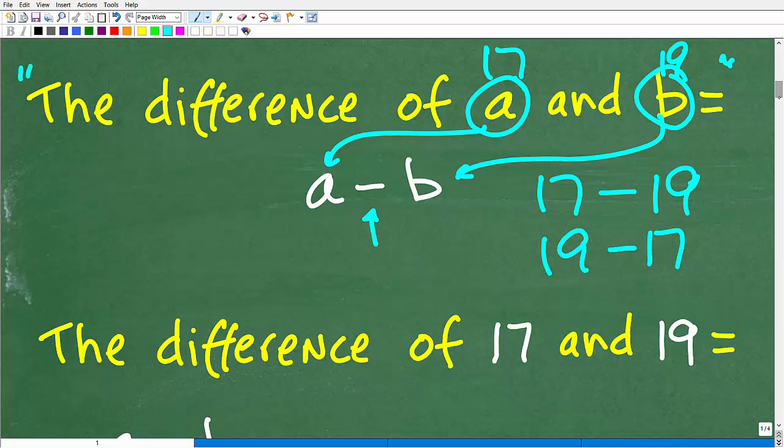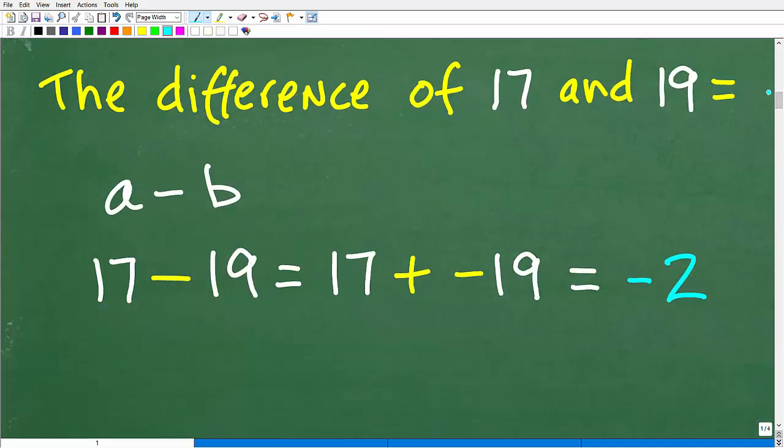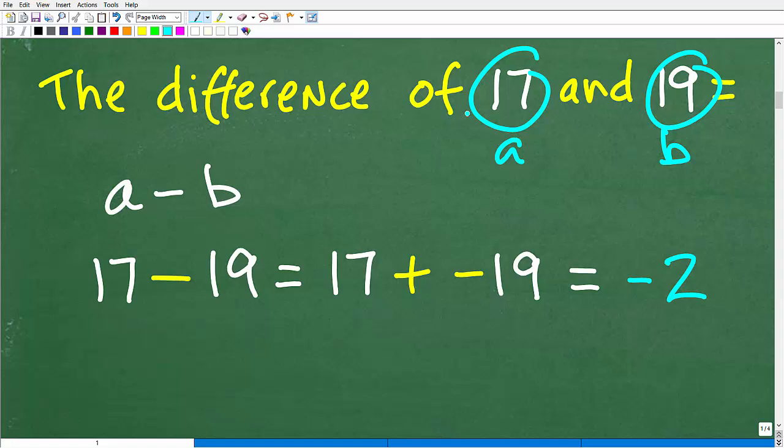So let's go ahead and see this in action. So the difference of 17 and 19, remember the first number is our A. The second number is our B. So the difference of two numbers is A minus B. So A is 17, and B is 19. So the question here really is 17 minus 19 is equal to what?